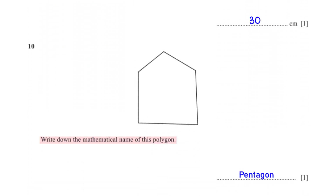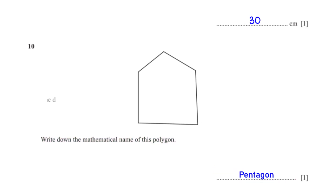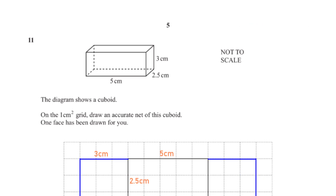Write down the mathematical name of this polygon. The total number of sides of the given polygon is five. A polygon with five sides is a pentagon.